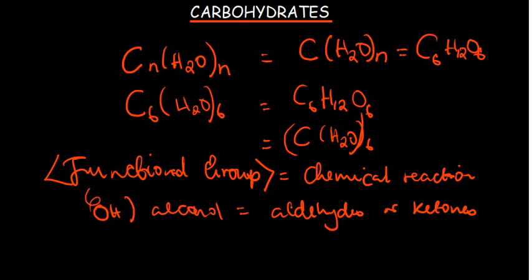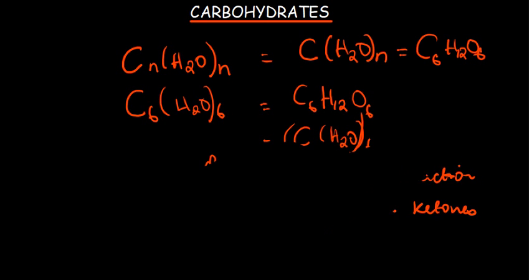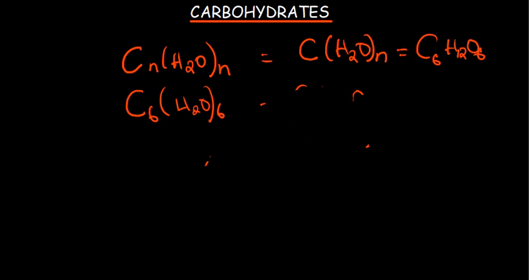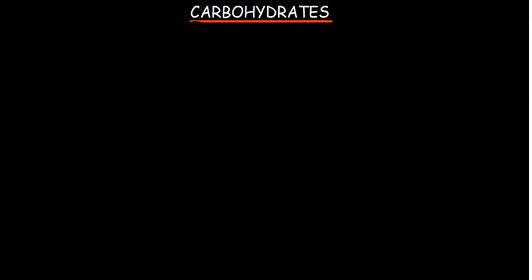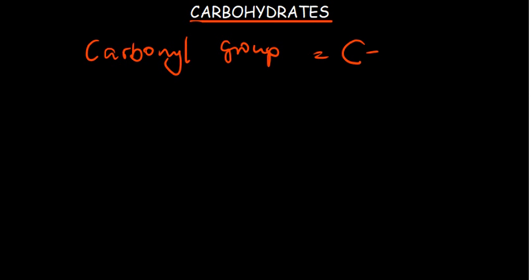An aldehyde has a carbonyl group — that is, a carbon double-bonded to an oxygen atom. So when you look at a carbohydrate structure, we have this carbonyl group present. The distinction is based on where this carbonyl group appears on the carbon chain.